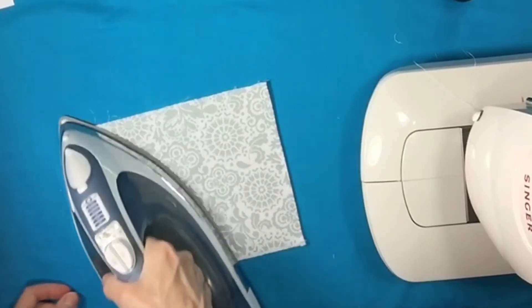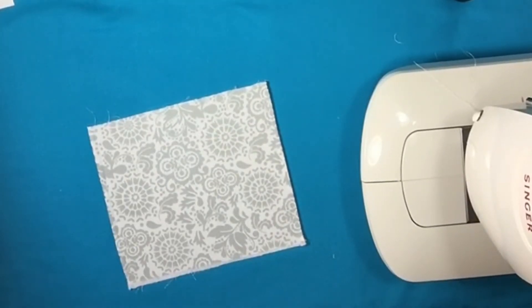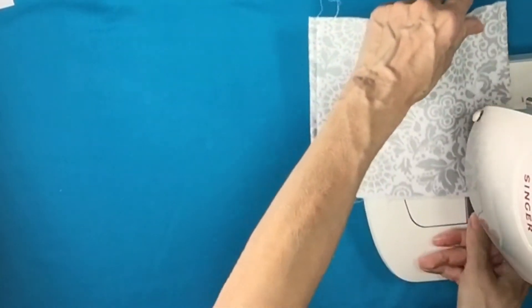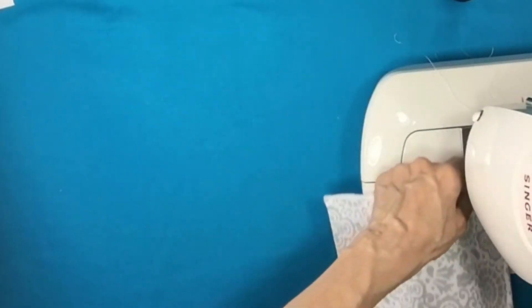You might need to use some steam for this as well, or you can spray it with some water. Next, we're going to do a top stitch right by the edge, about one fourth an inch away from the edge. And we want to do it on the other side as well.